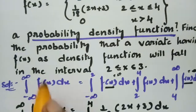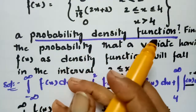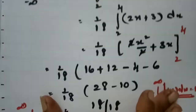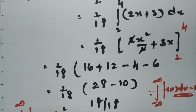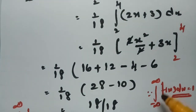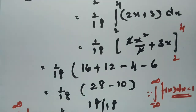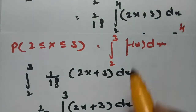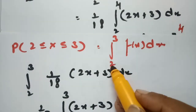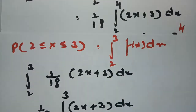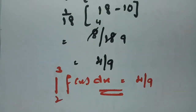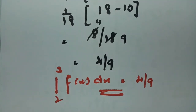To summarize: first we proved f(x) is a probability density function by showing that the integral from minus infinity to plus infinity of f(x) dx equals 1. Then we found the probability that the variate falls between 2 and 3, which equals 4/9. Thank you for watching.